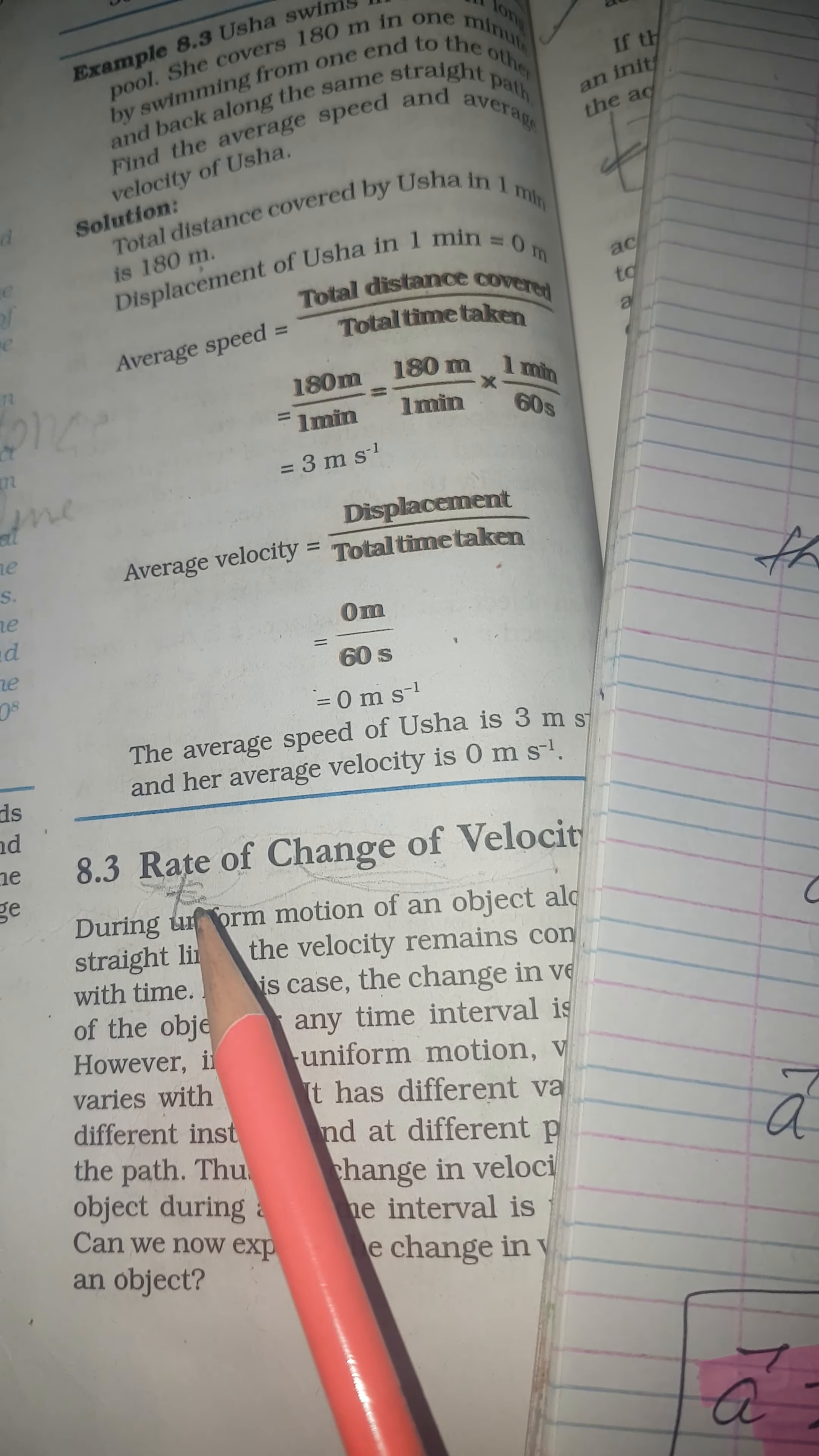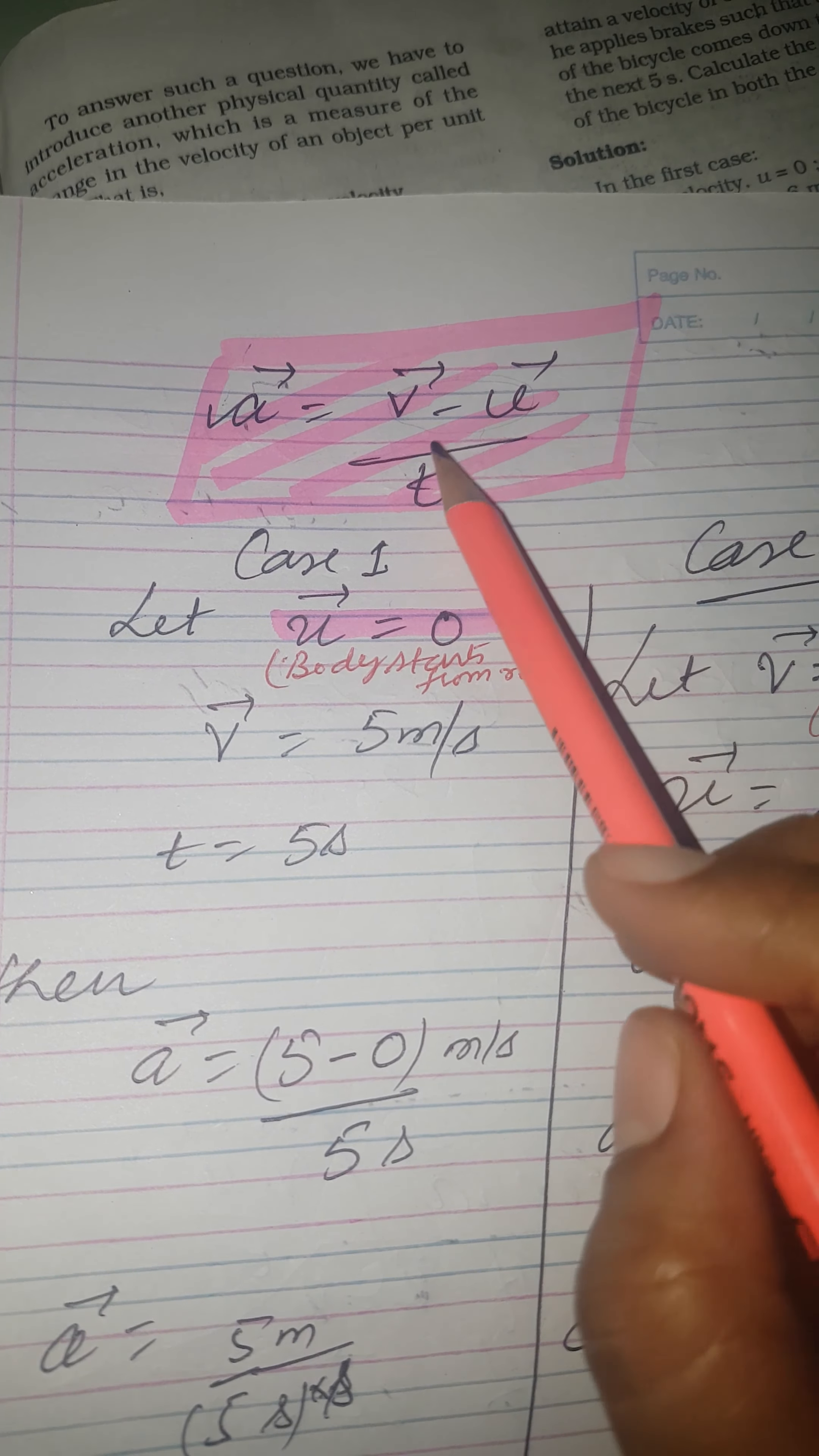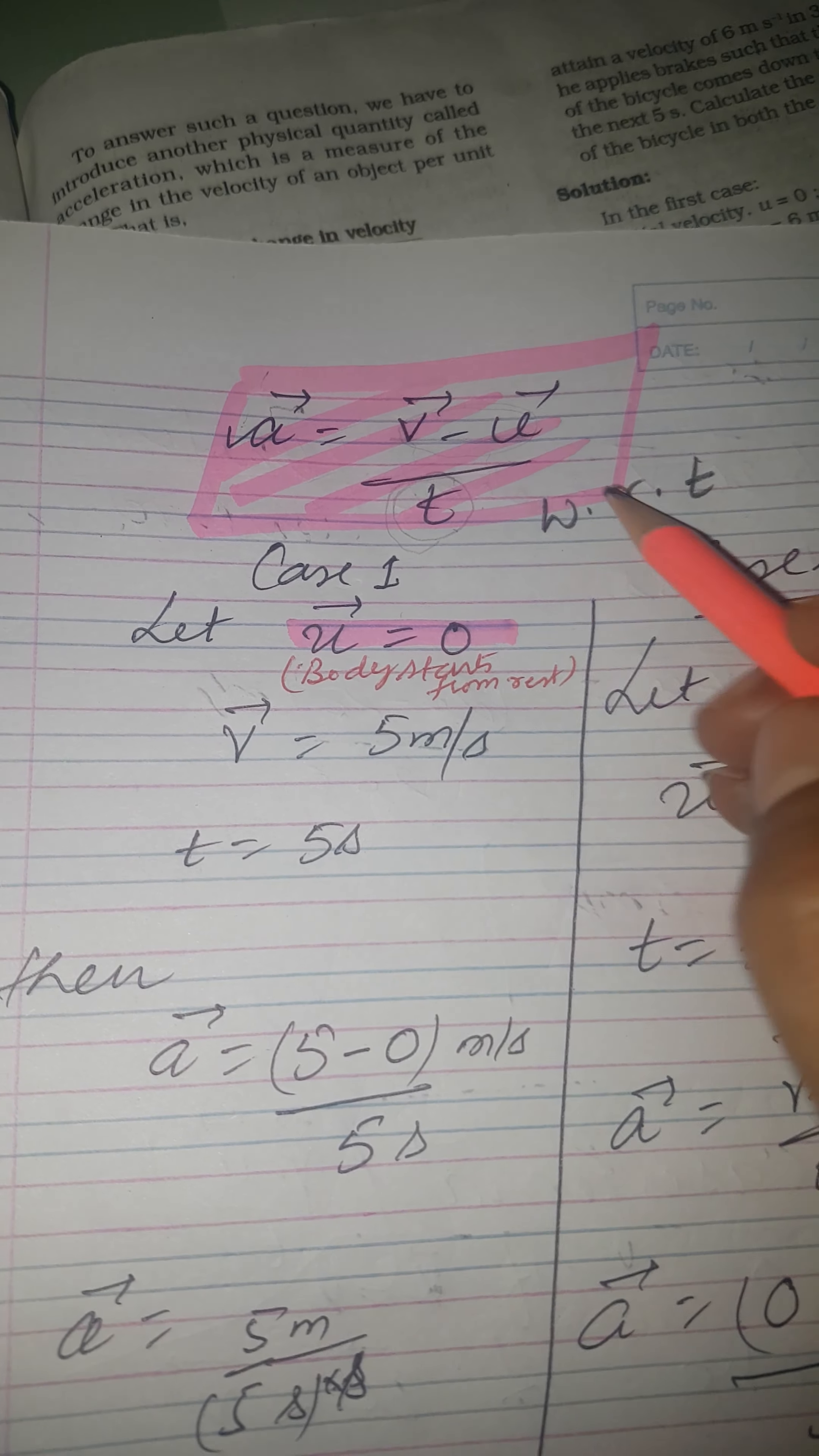So here I have written the formula for the same - change of velocity, and this is actually rate. Rate means with respect to time. With respect to time can be written as this.